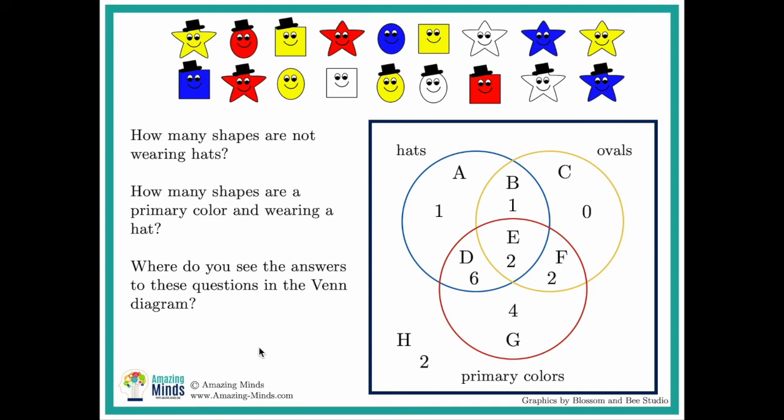And then you can ask some different questions. How many are not wearing hats? How many shapes are a primary color and wearing a hat? Where do you see the answers to these questions in the Venn diagram? So once again it's important for them to always explain their reasoning.